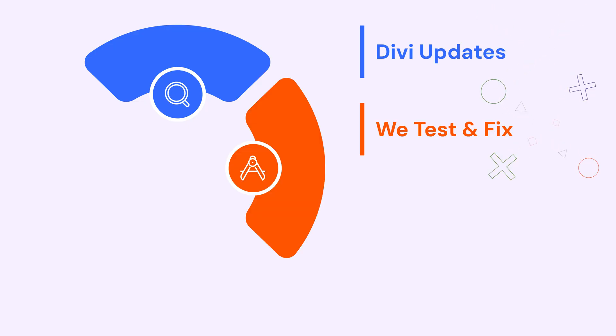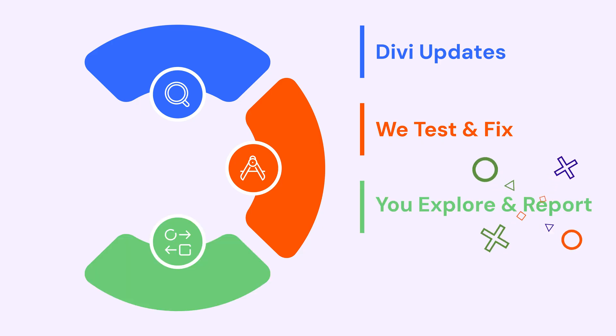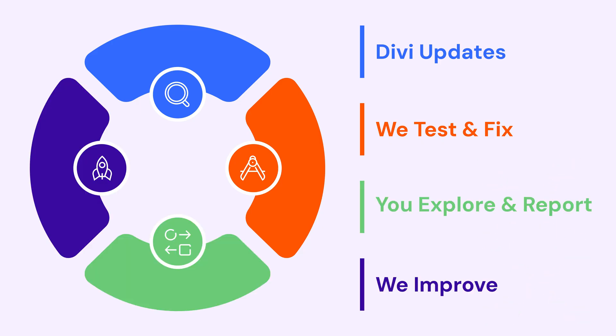Elegant Themes is actively changing the code, which can affect third-party plugins like ours. So here's how we handle it: DB updates — we test and fix. We release a new build in the community. You explore and report back. We improve. This cycle makes sure DB Flash is fully ready when DB5 goes stable.